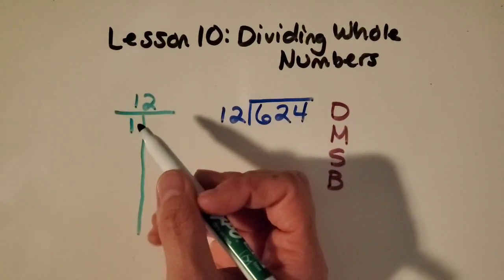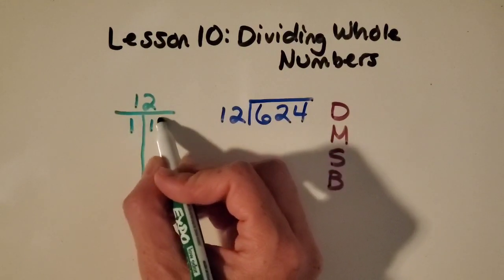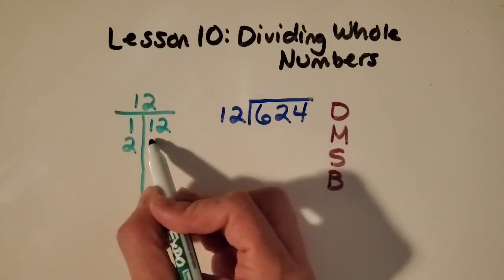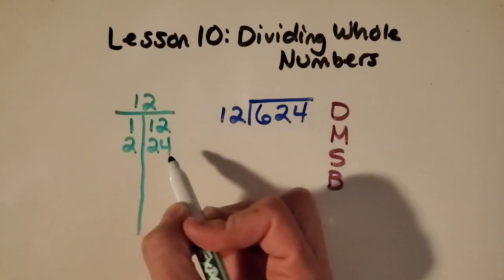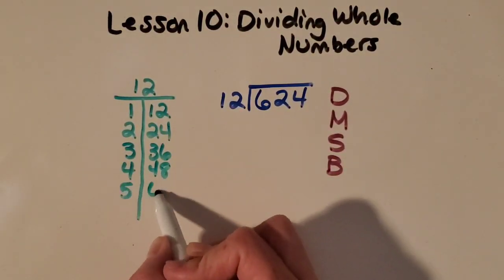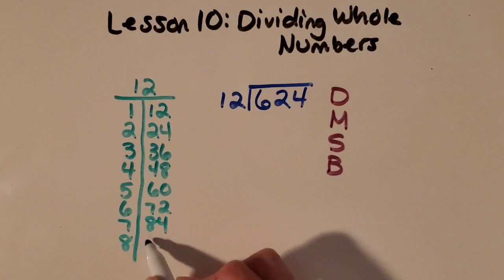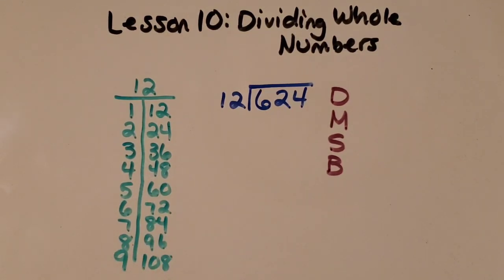One times 12 is 12. Two groups of 12 is 24, and so on. Okay, now that I've got a good 12 T-chart going, all my 12 facts, I'm ready to go.